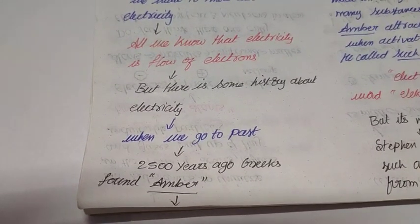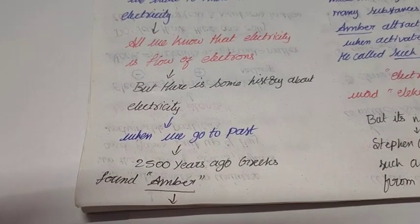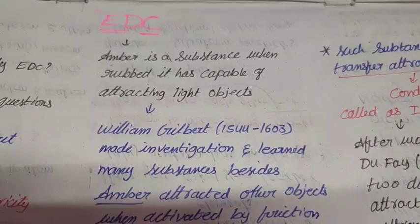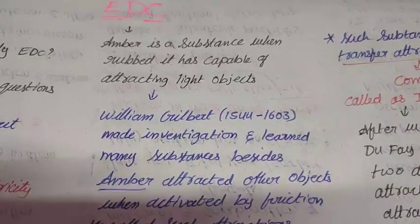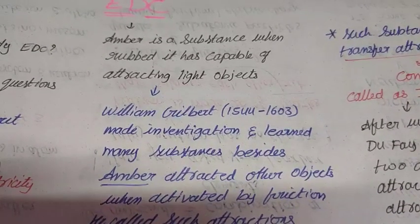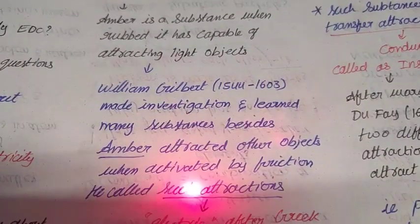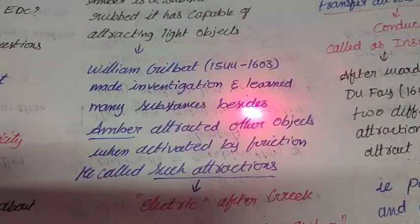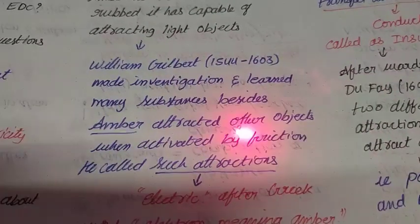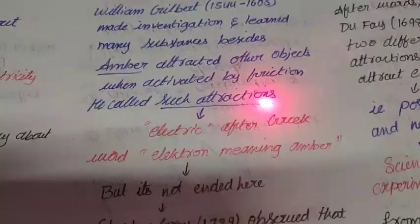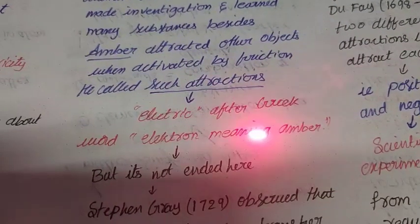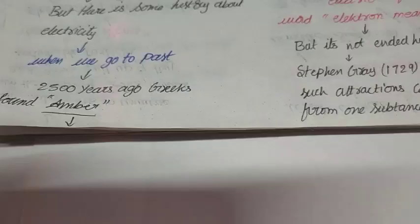But do you know that there is some history about electricity? Let's see. When we go to the past, not using a time machine but simply going to the past, 2500 years ago Greeks found one substance called amber. Amber is a substance that has some interesting qualities. It attracts light objects when rubbed with another substance like rubber.